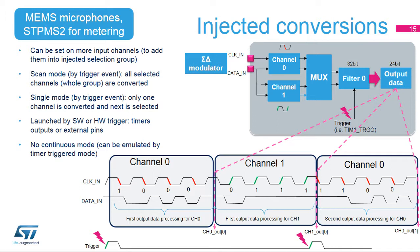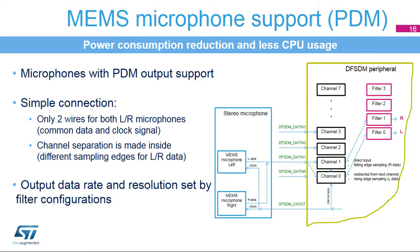The MEMS microphone provides a pulse-density modulated, or PDM, data signal whose format is theoretically like the sigma-delta bit stream. The MEMS microphone has stereo support if two microphones are connected in parallel with common data and clock signals. Rising clock edge samples left audio data; falling clock edge samples right audio data. Implementation into DFSDM transceivers requires Channel 0 to use redirection input from Channel 1, while Channel 1 uses direct input. Channel data, left versus right, are separated by selecting either the rising or falling edge in the SPI configuration of the channels. The clock signal is provided by the DFSDM clock output because MEMS microphones are slaves and need an external clock for data sampling and communication.